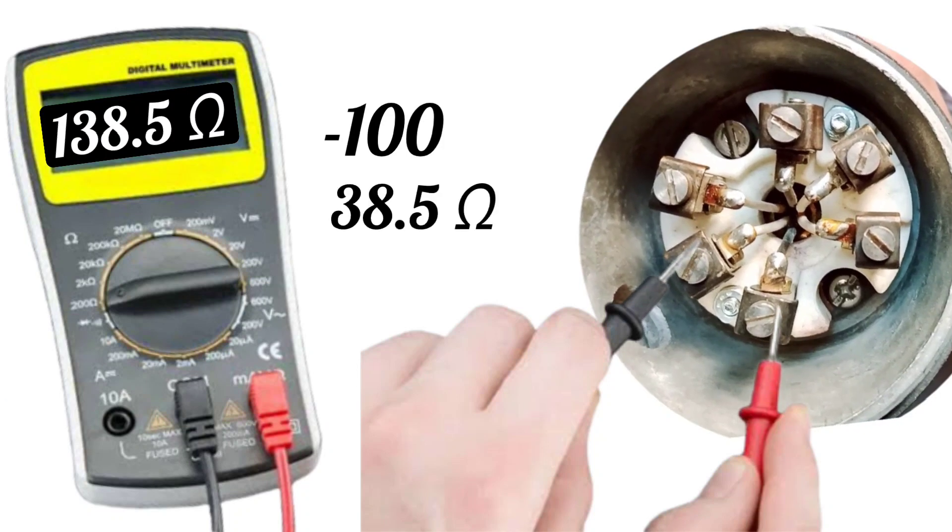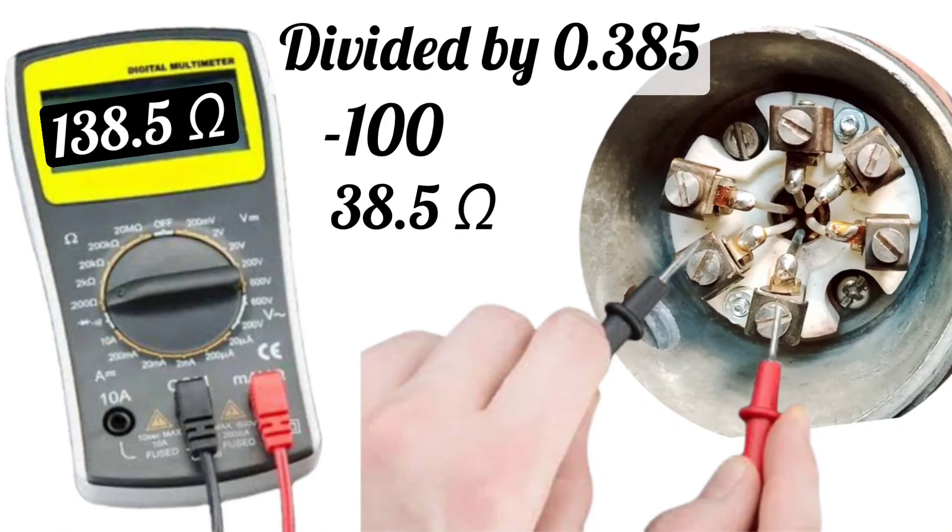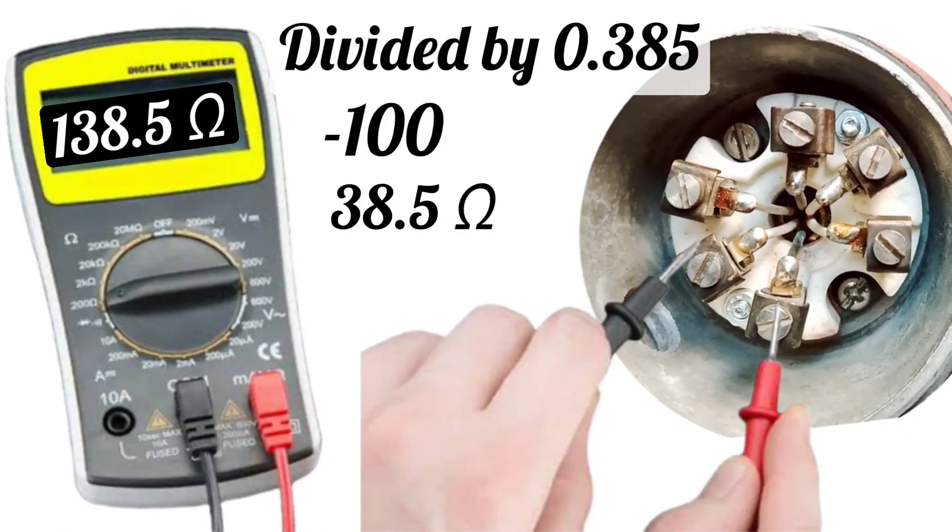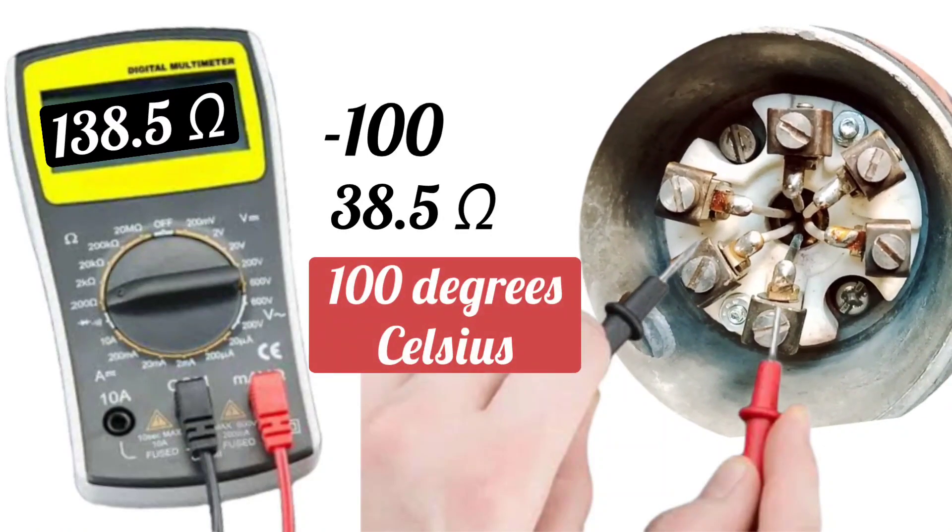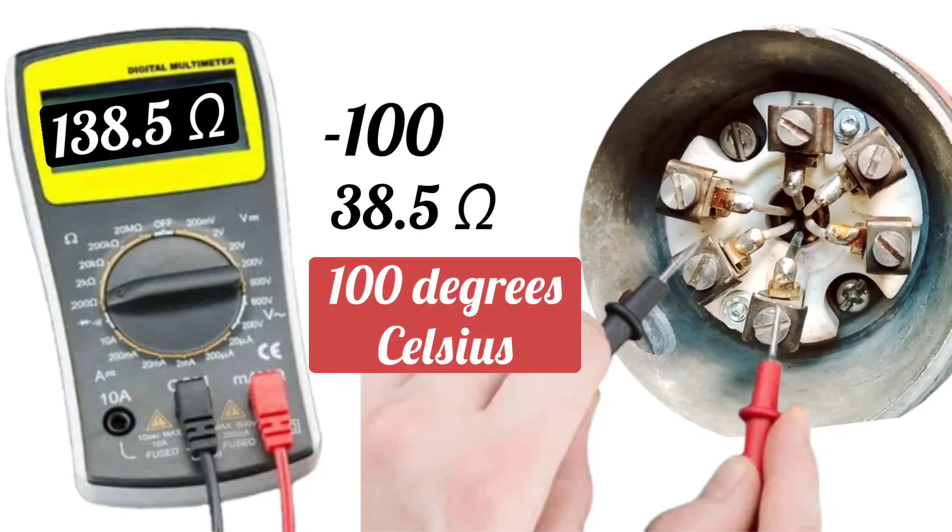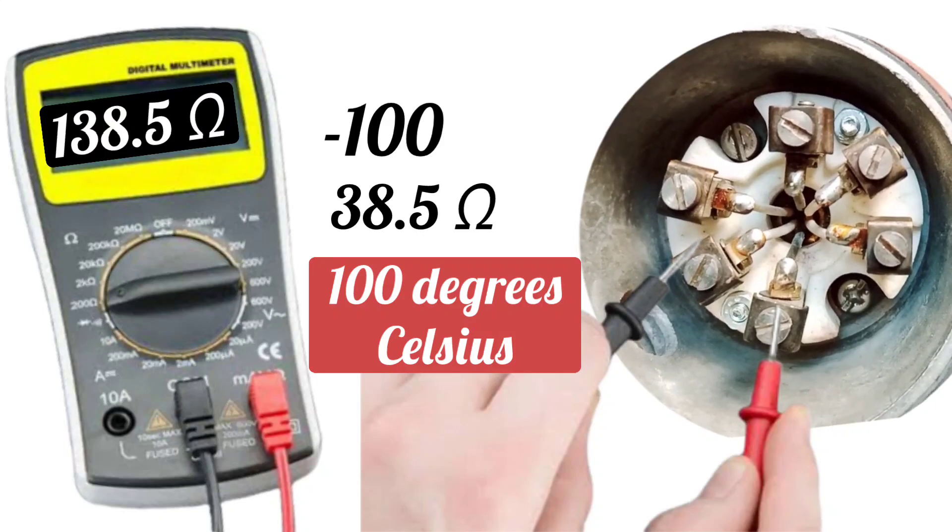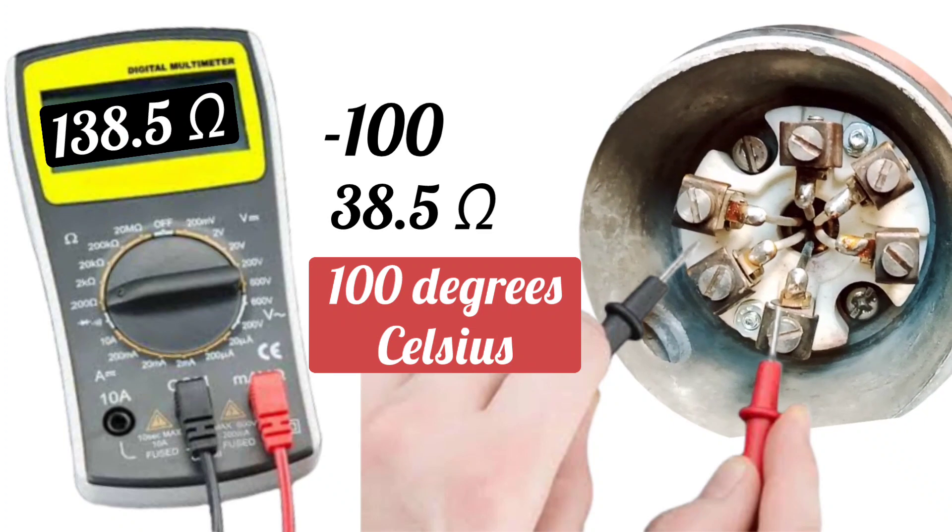When we divide it by 0.385, it will be 100, which means 100 degrees Celsius temperature will be on that place. If resistance is showing 138.5 ohms, let's solve it with other method.